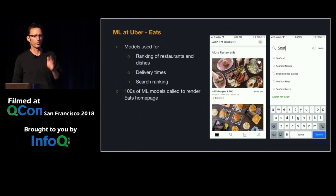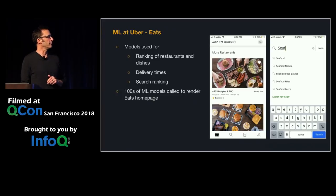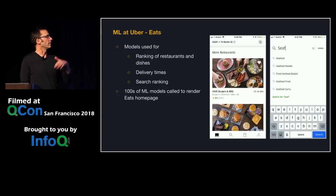For search ranking in Uber Eats, when you search for a meal it doesn't just do prefix-based searching — it also tries to predict your intent and what you're looking for. This is proven in A/B tests and makes a big difference for Uber's business.